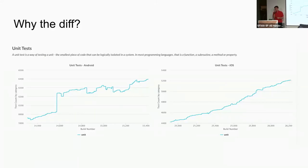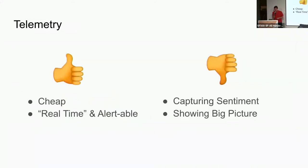This is another point I want to make: there's a benefit to having a team that works across two platforms. If we specialized on Android and iOS separately, we would never have looked at these things side by side and wouldn't have asked ourselves this question. So there is a certain benefit to having a team that can cover both platforms. To recap, telemetry is cheap, it's real-time, and you can make alerts from it — but it doesn't capture the big picture and doesn't capture developer sentiment.